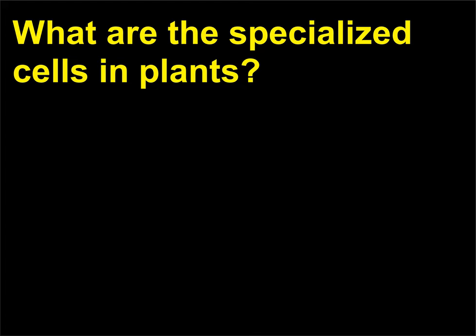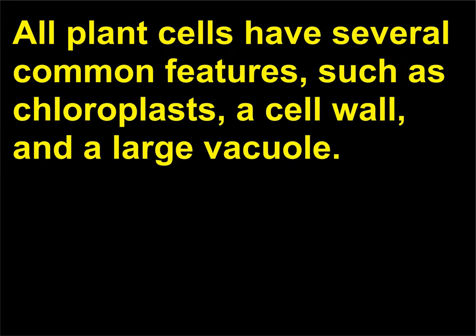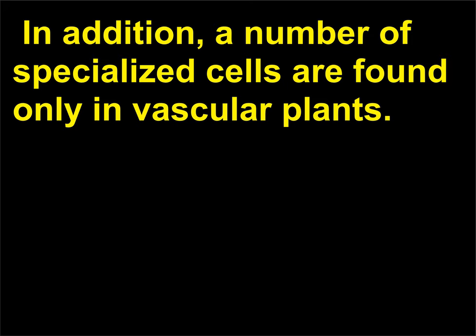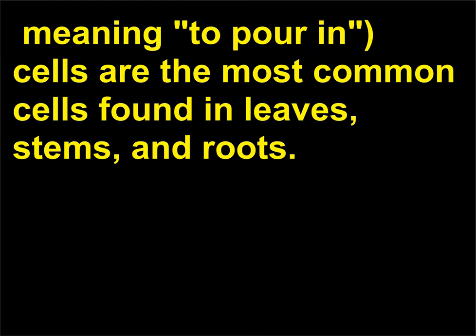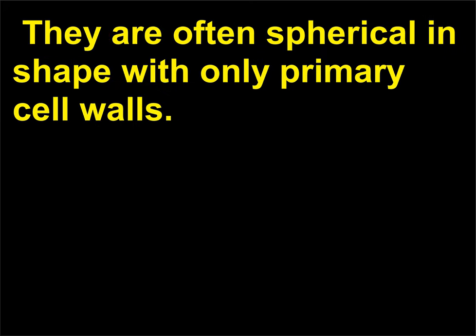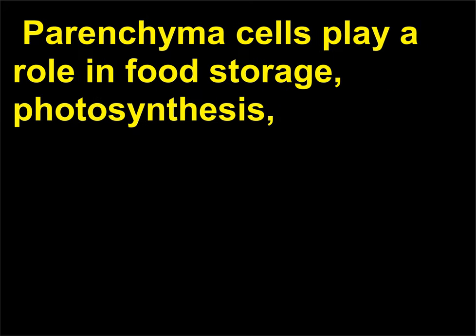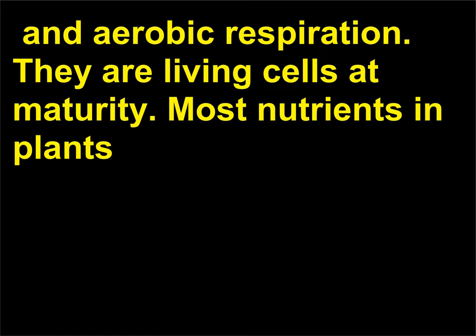What are the specialized cells in plants? All plant cells have several common features, such as chloroplasts, a cell wall, and a large vacuole. In addition, a number of specialized cells are found only in vascular plants. They include parenchyma cells — from the Greek 'para' (beside) and 'enchein' (to pour in) — which are the most common cells found in leaves, stems, and roots. They are often spherical in shape with only primary cell walls. Parenchyma cells play a role in food storage, photosynthesis, and aerobic respiration. They are living cells at maturity. Most nutrients in plants, such as corn and potatoes, are contained in starch-laden parenchyma cells. These cells comprise the photosynthetic tissue of a leaf, the flesh of fruit, and the storage tissue of roots and seeds.